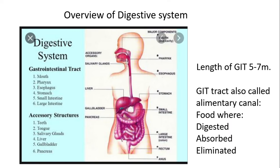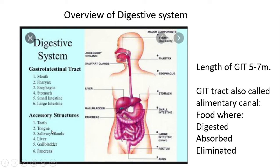The overview of the digestive system: the length of the whole gastrointestinal tract from the mouth to the anus is roughly 5 to 7 meters. The digestive system is mainly separated into two parts. The first is the gastrointestinal tract, which is comprised of the mouth, pharynx, esophagus, stomach, small intestine, and large intestine. The accessory structures — which are not directly in contact with food — include the teeth, tongue, salivary glands, liver, gallbladder, and pancreas.